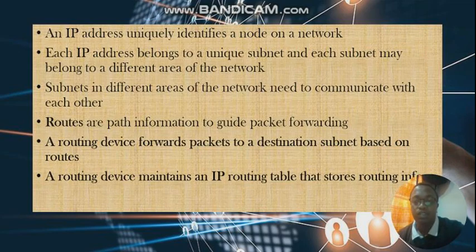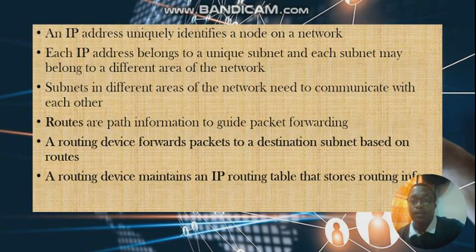Just like a switch, a router is intelligent and is able to learn about other routers or other networks, and it stores this information in the IP routing table. An IP address uniquely identifies a node on a network, and each IP address belongs to a unique subnet. Each subnet may belong to a different area of the network, and these subnets in the different areas need to communicate with each other at some point.